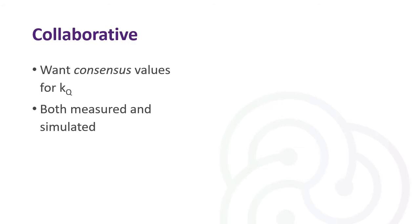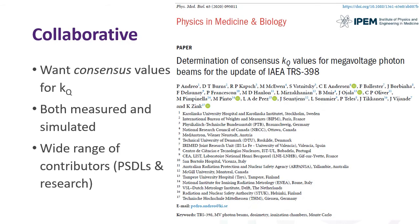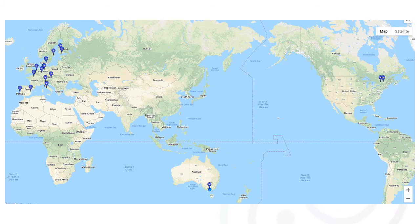This is a collaborative piece of work. We want consensus values for KQ, looking at both measured and simulated KQ values to get a more representative sample. This involved a wide range of contributors — both primary standards laboratories and research groups around the world. Chris and myself are the ARPANSA representatives on the paper, and there are many other ARPANSA staff acknowledged in the acknowledgements for their contributions. You can see here a map showing where all the different research groups are from, with ARPANSA really flying the flag for the Southern Hemisphere team.